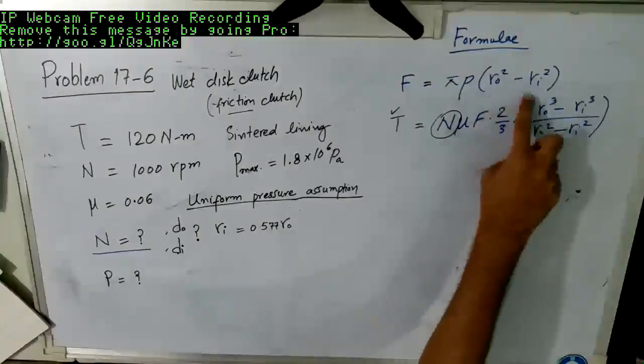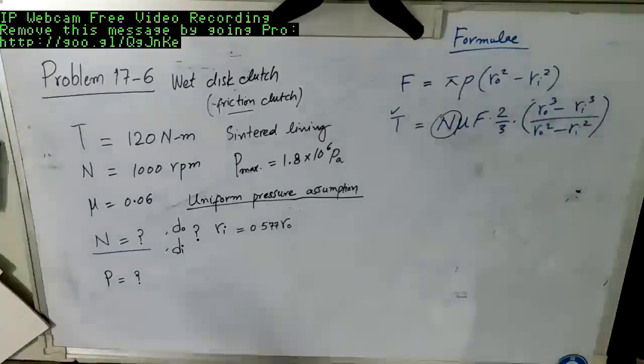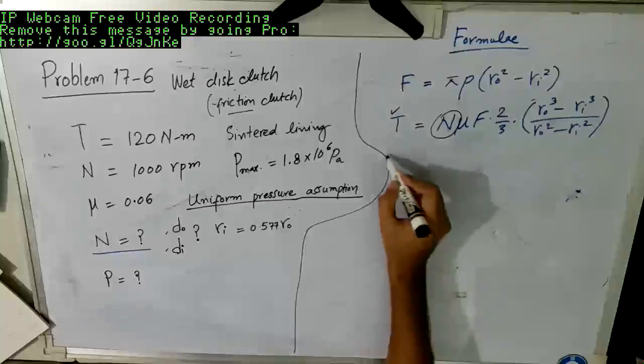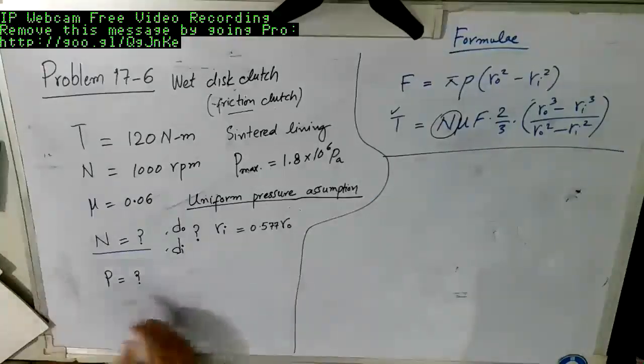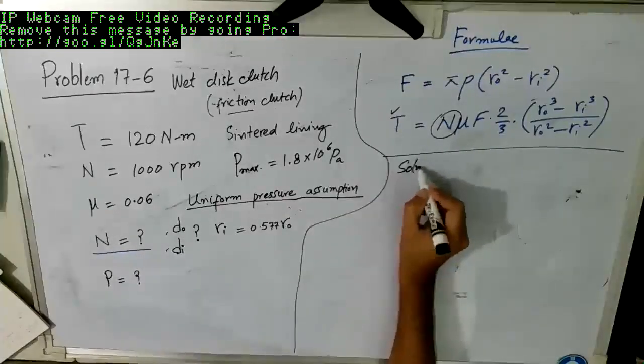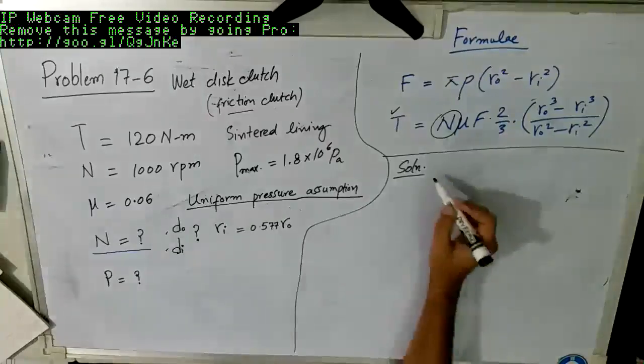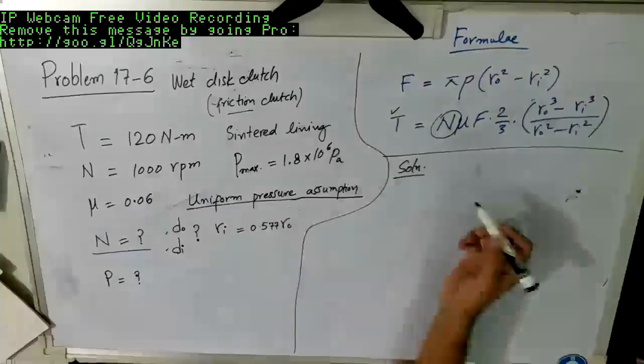But the problem here is that we are not given with any of the radii. We don't know the inner radius, we don't know the outer radius, but we know the relationship between these two. In order to find out any of these quantities, we need both of these. So what we are going to do is we are going to make an assumption on one of the radius values.